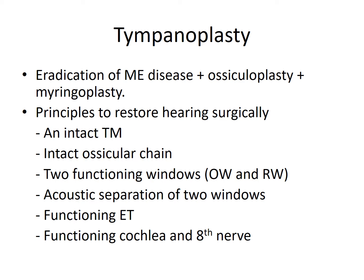The first principle is that there should be an intact Tympanic Membrane — every attempt should be made to repair it with a graft material. Similarly, there should be an intact ossicular chain so that sound is conducted properly to the Stapes or the Oval Window. Then there should be two functioning windows — the Oval Window and the Round Window — because when sound goes to the Oval Window it leads to movement of the perilymph, and that pressure is released through the Round Window. If either window is not functioning, the movement of fluid will not be proper.